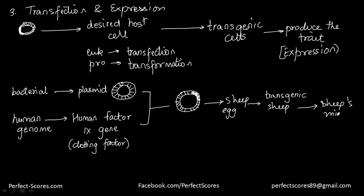You might ask why we need the sheep in this process. We need something whose products we can multiply and produce on a mass scale — commercialize it. It would not be possible to commercialize genes from humans itself without experimentation on humans. So it is inserted into a sheep egg because the sheep provides a product — sheep's milk — that people can consume without any problems.